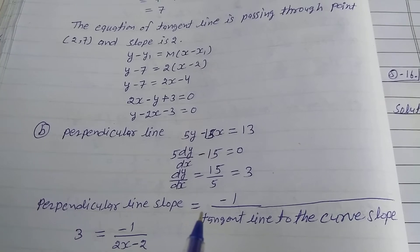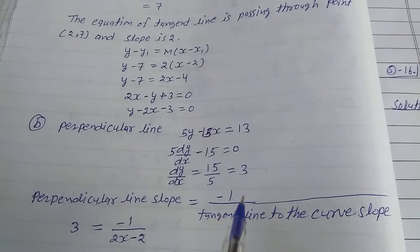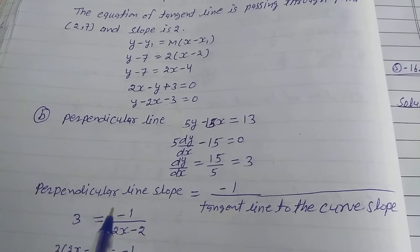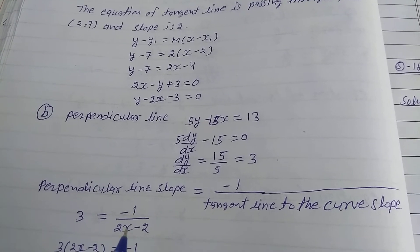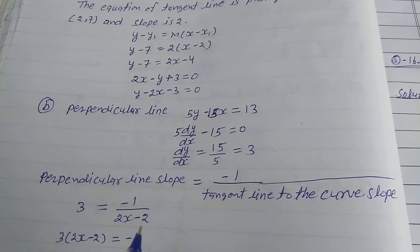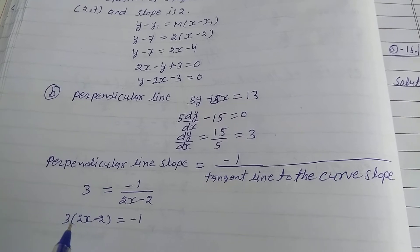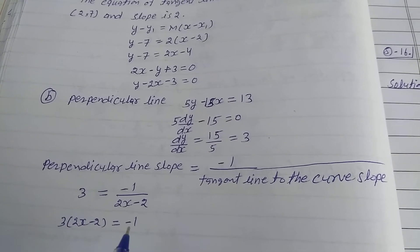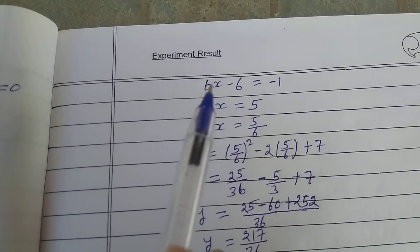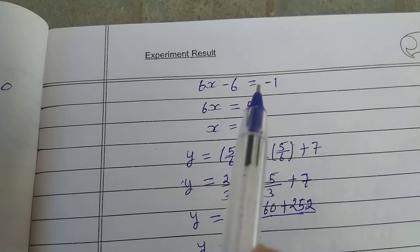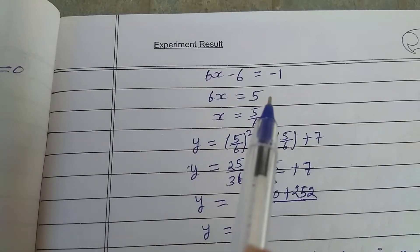The condition for perpendicularity is: perpendicular line slope = -1 / (tangent slope). So 3 = -1 / (2x - 2), meaning 3(2x - 2) = -1, giving 6x - 6 = -1. Therefore 6x = 5, so x = 5/6.